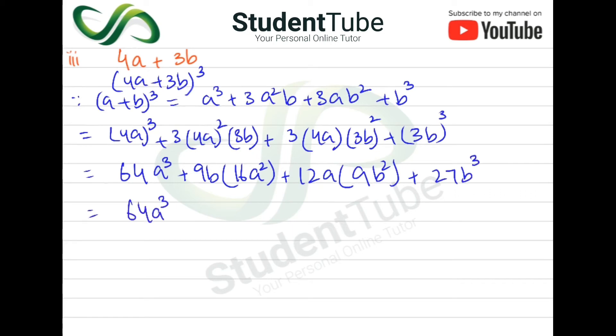Now here 64a³ plus 9b we have to multiply from 16a², so this will be 144a²b plus 12a we have to multiply from 9b², so this will be 108ab² plus 27b³. Answer.